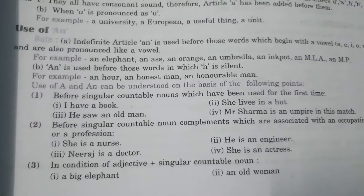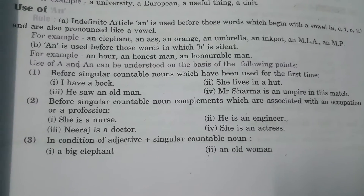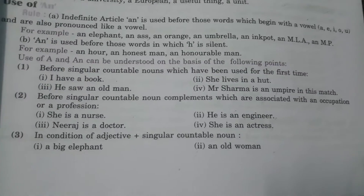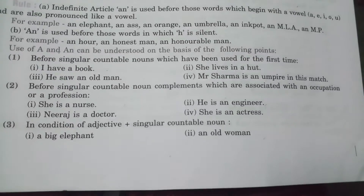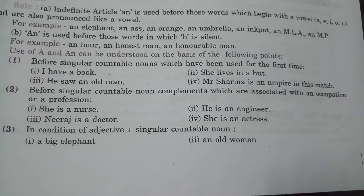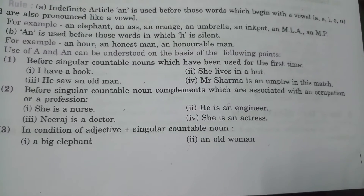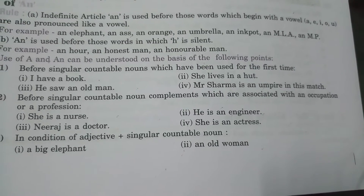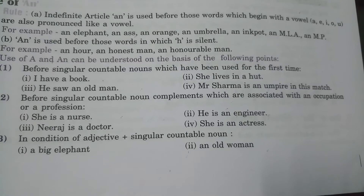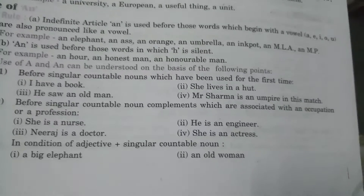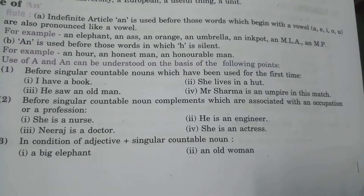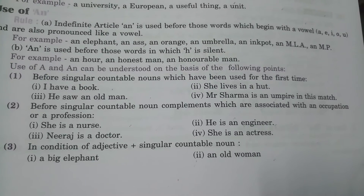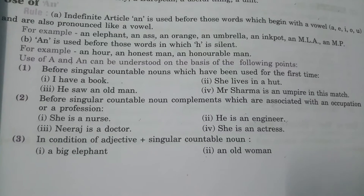Use of a and an can be understood on the basis of the following points. First, before singular countable nouns which have been used for the first time: 'I have a book,' 'He saw an old man,' 'She lives in a hut,' 'Mrs. Sharma is an umpire in this match.' Second, before singular countable noun complements associated with an occupation or profession: 'She is a nurse,' 'Neeraj is a doctor,' 'He is an engineer,' 'She is an actress.'